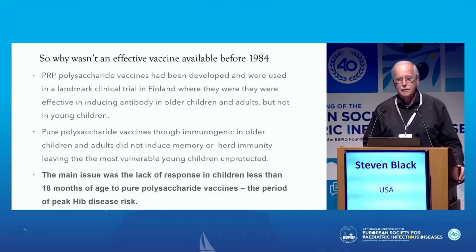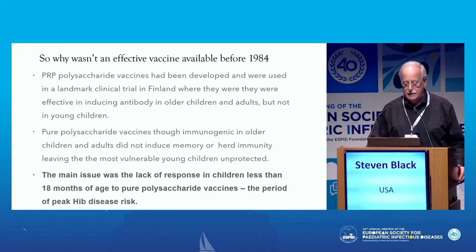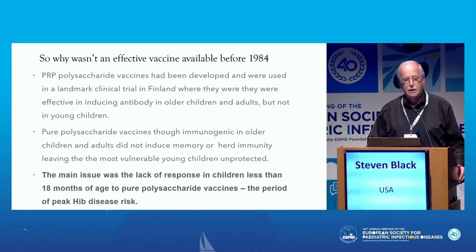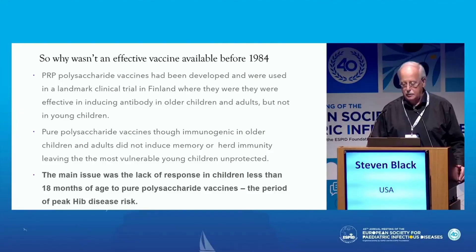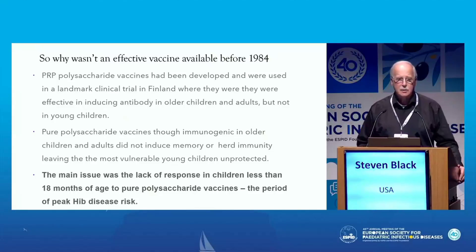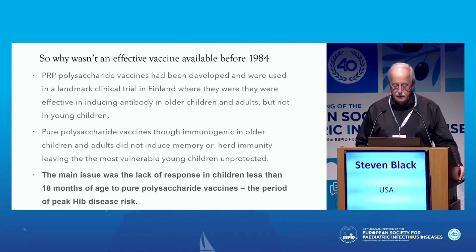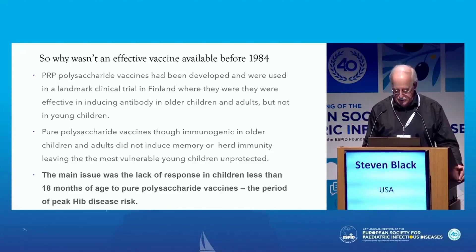So why wasn't there an effective vaccine available before the 1980s? Polysaccharide vaccines had been developed and were used in a landmark trial in Finland, where they were shown to be effective in inducing antibody in older children and adults, but not in young children. Although pure polysaccharide vaccines were immunogenic in adults, the main issue was the lack of response in children less than 18 months of age — the period where Hib had the greatest risk.